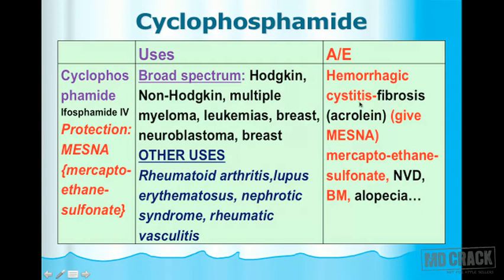The reason cyclophosphamide causes hemorrhagic cystitis is that it contains acrolein, which is toxic to the bladder. To prevent this toxicity we give MESNA (mercaptoethane sulfonate). Other adverse effects of cyclophosphamide include nausea, vomiting, diarrhea (gastrointestinal intolerance), bone marrow suppression, and alopecia.